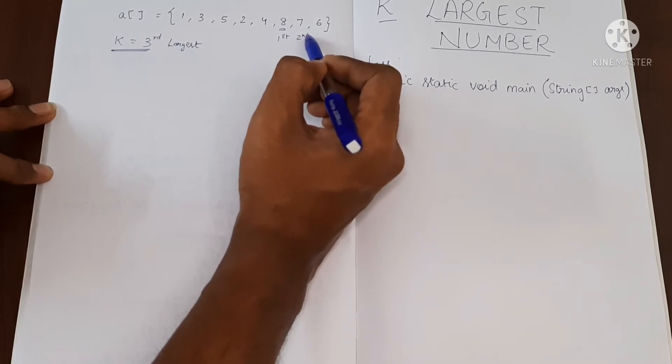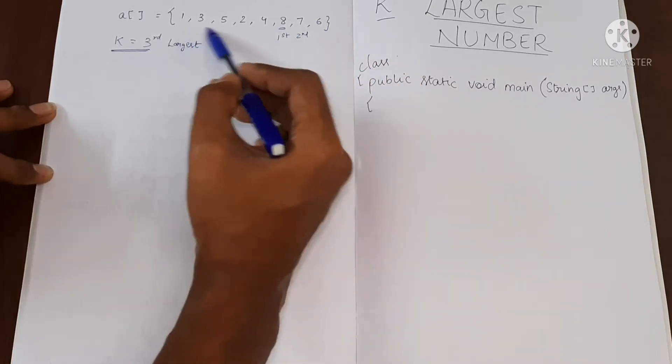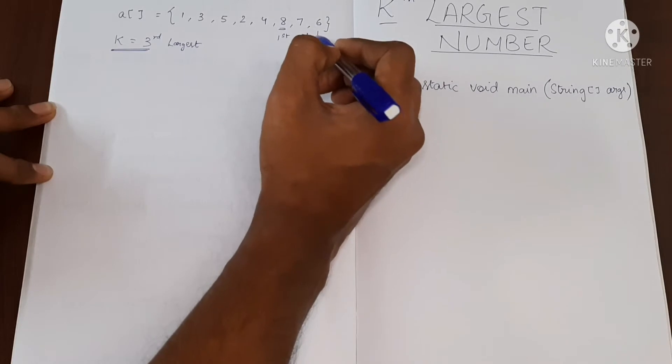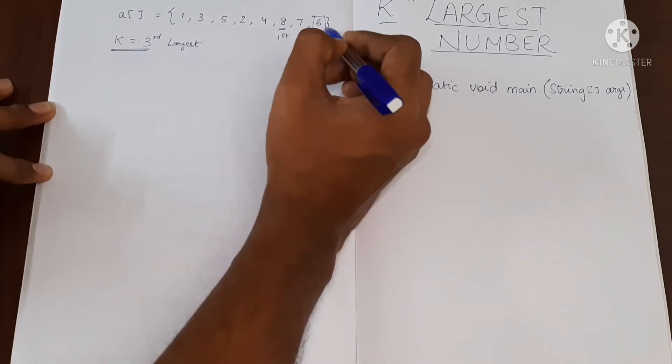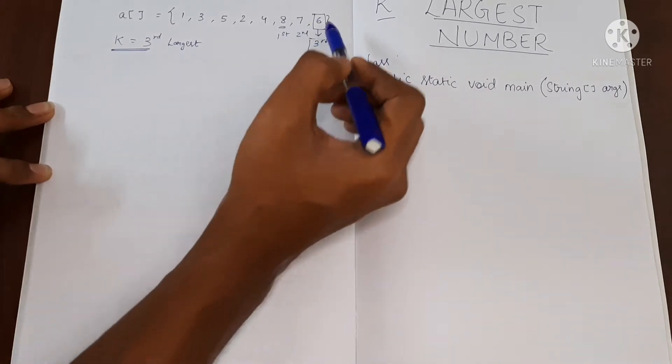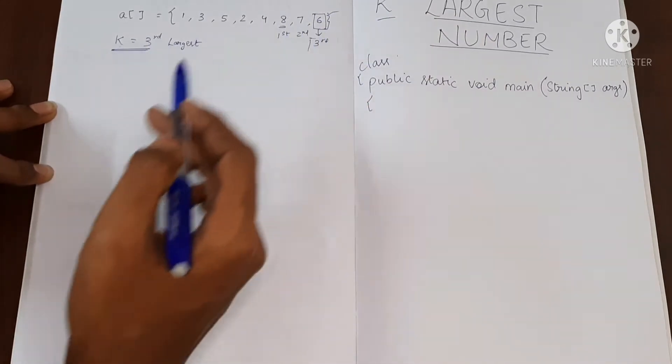So this is the second largest one and 6 seems to be the third largest one. And this is the required output. This is what we want. This is the kth largest value.